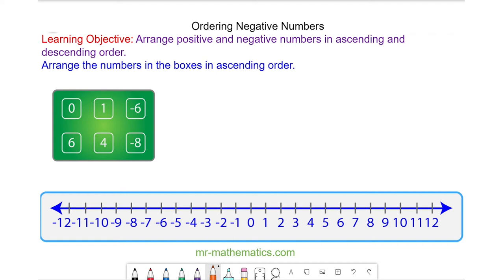We'll do this by writing each number on the number line. You can see zero goes here, 1 is here. We have negative 6, positive 6, 4, and negative 8.